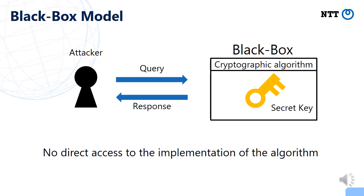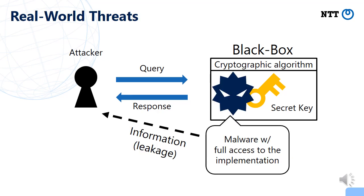This is the usual black-box model. But in the real world, sometimes we have some problems with the black-box model. The problem is that there may exist a kind of malware which enters into a personal computer or server where the cryptographic algorithm is implemented, and this malware may leak some information to the attacker.